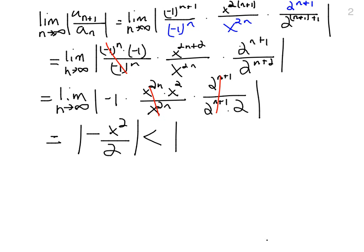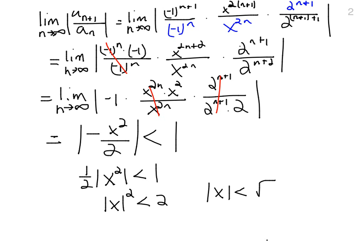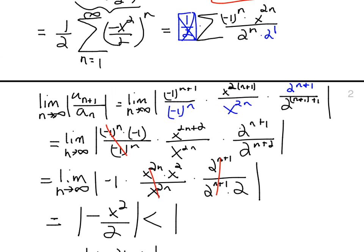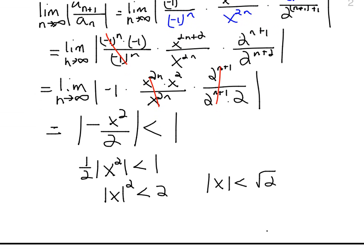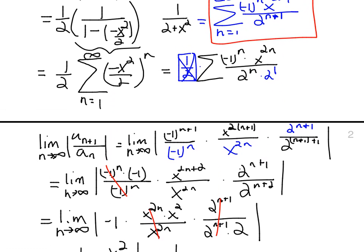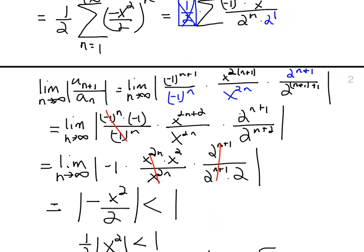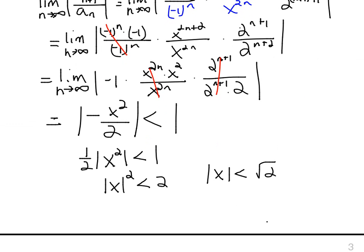The ratio test says that must be less than 1 for convergence, so one half times the absolute value of x squared must be less than 1, meaning the absolute value of x squared is less than 2. Taking the square root gives the absolute value of x is less than the square root of 2. We then check the endpoints, and we expect divergence at both x equals root 2 and x equals negative root 2.